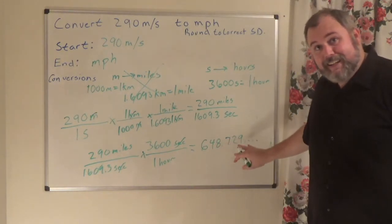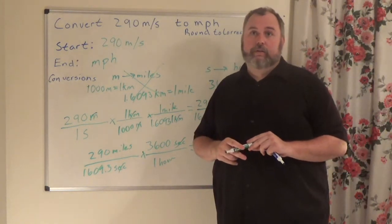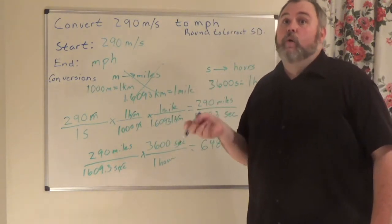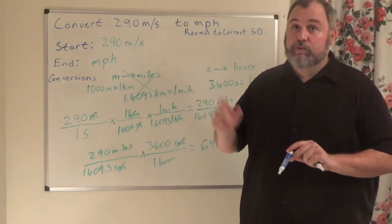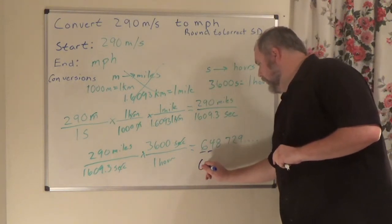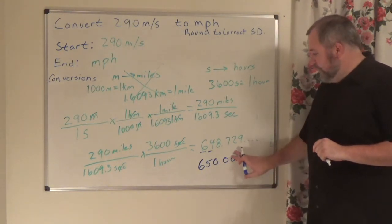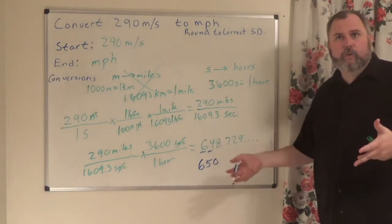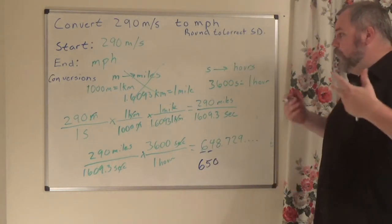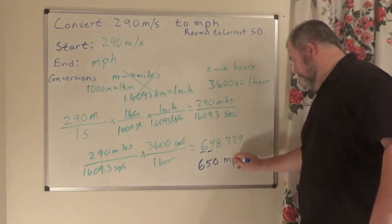My answer says round to correct significant digits. Going back to the start: 290 — the 2 is significant, the 9 is significant, but the 0 at the end of a whole number is not significant. So we round to two significant digits: one, two. The 8 tells the 4 to round up to 5, giving 65. The 8 becomes a 0, all other numbers become 0, trailing zeros get dropped, but this 0 is in a whole number so it stays. That's 650. Miles over hours: 650 miles per hour.